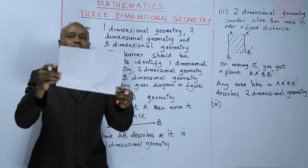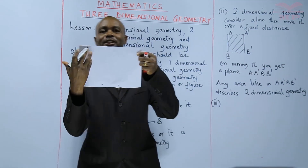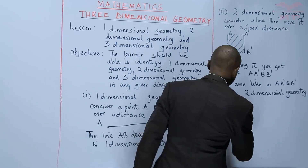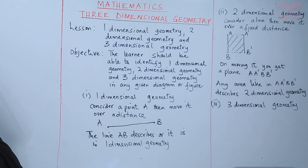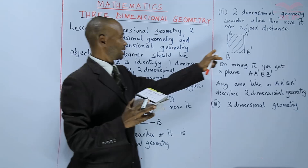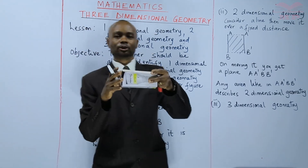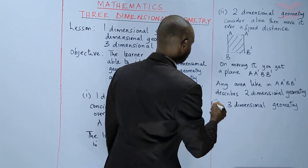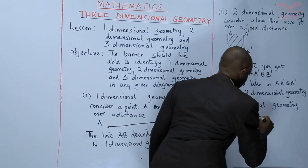In fact the paper I'm holding describes two-dimensional geometry because it has an area — it is a plane. That is two-dimensional geometry. Now for three-dimensional geometry, you realize we are developing: we developed a point to get a line, and we developed a line to get a plane. So if you look at this plane it only describes two-dimensional geometry. We are going to consider a plane ABCD and move the points of the plane through a fixed distance.